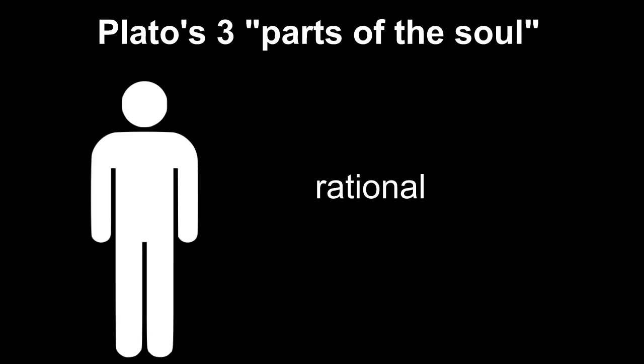So the three parts of the soul, first of all, we have the rational part. This is the part that's represented by a human being. And this part is like the guardians. This is the part of you that's able to tell what is reasonable, what is moral, what is in your interest long-term. It's your rational part. You could say it's your mind.